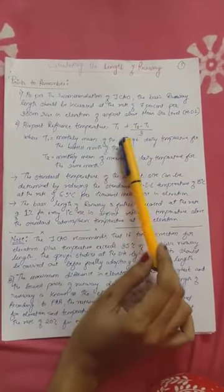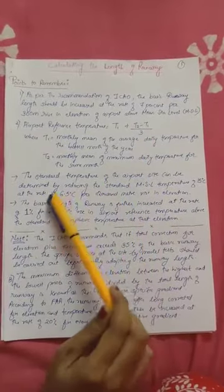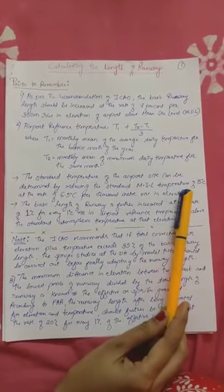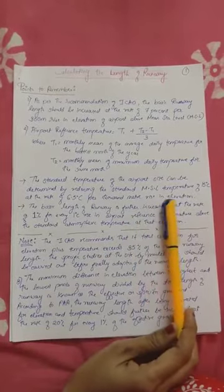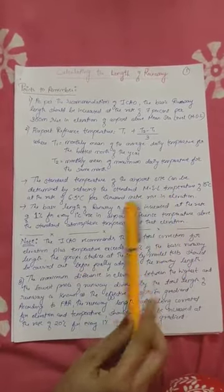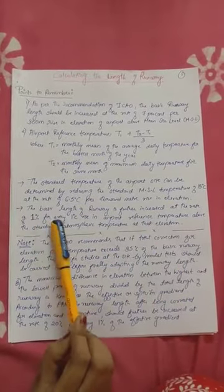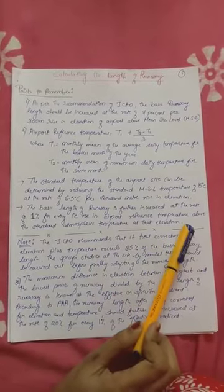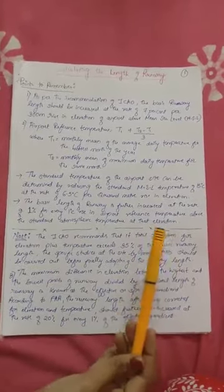We calculate the airport reference temperature. Then the standard temperature of the airport site can be determined by reducing the standard mean sea level temperature of 15°C at the rate of 6.5°C per 1000 meter rise in elevation. The basic runway length is further increased at the rate of 1% for every 1°C rise in airport reference temperature above the standard atmospheric temperature at that elevation.